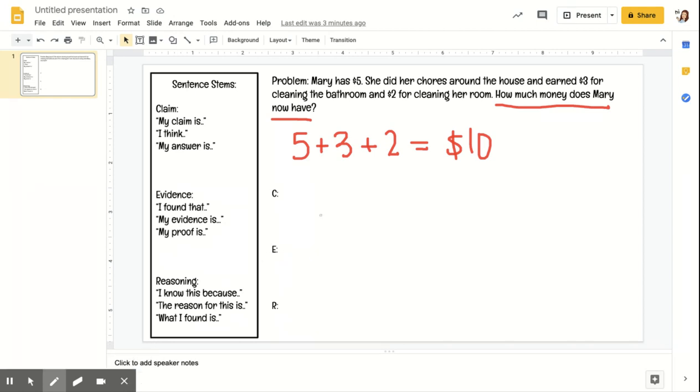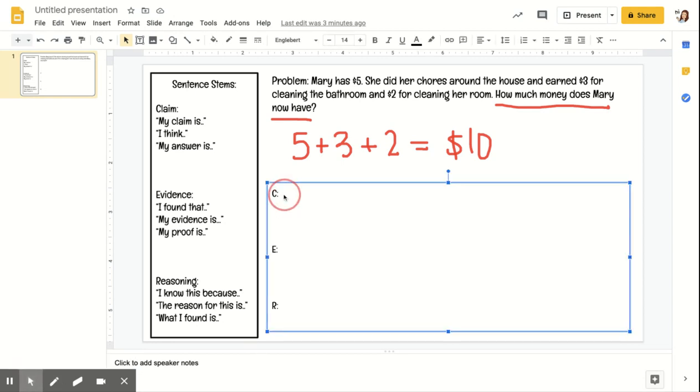Usually when we take our claim, that's like I said, our answer. So I would write, let me see if I can get my text box. There we go. So for example, I could write: my claim is Mary now has $10. Simple as that.